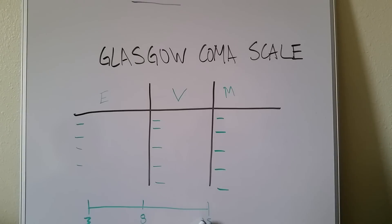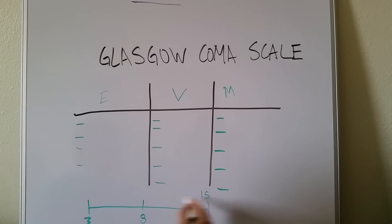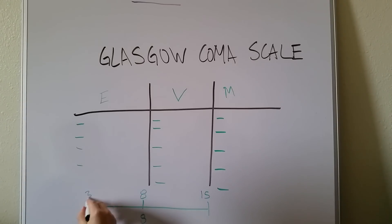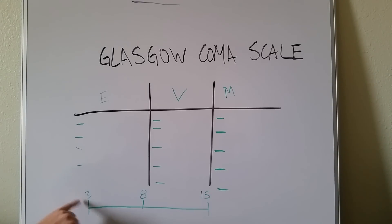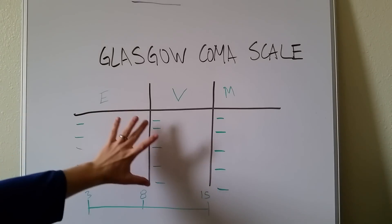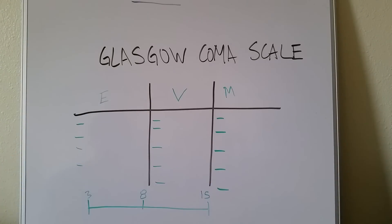Conversely, the highest score is fifteen, which represents a normal, healthy adult patient. Whereas three is the lowest, fifteen is the highest. Since we have four points for Eyes, five for Verbal, and six for Motor, that equals fifteen. So if you had the best score in each category, you'd be fifteen.